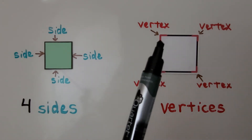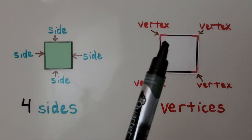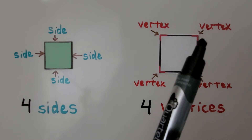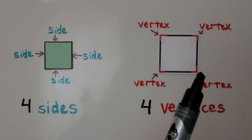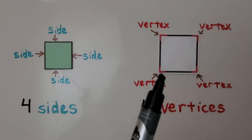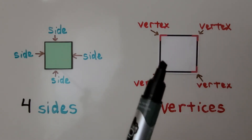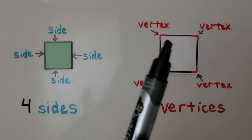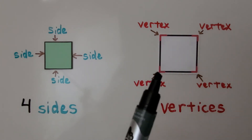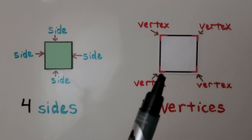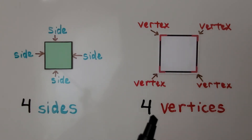We have a vertex here, a vertex here, a vertex here, and a vertex here. That's one, two, three, four corners — four vertices. When we have more than one, we say vertices.